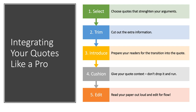Here are five basic steps to using quotes like a professional to back up your research with outside sources. First, choose quotes that help strengthen your argument. Next, cut out everything in the quote but the core concept. Introduce your readers to the quote, and then give your quote some context. Finally, edit around your quote for maximum smoothness. Let's take a closer look at each of these steps in detail.